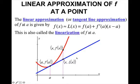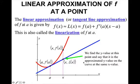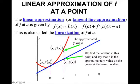So if you wanted to look at this — just picture that this x value is very, very close to the a value. What we're going to be doing is use the point on the tangent line. This y value we are going to say is approximately the same as the y value on the curve at that x value. So we find the y value at this point and say that it is the approximated y value on the curve at the same x value.